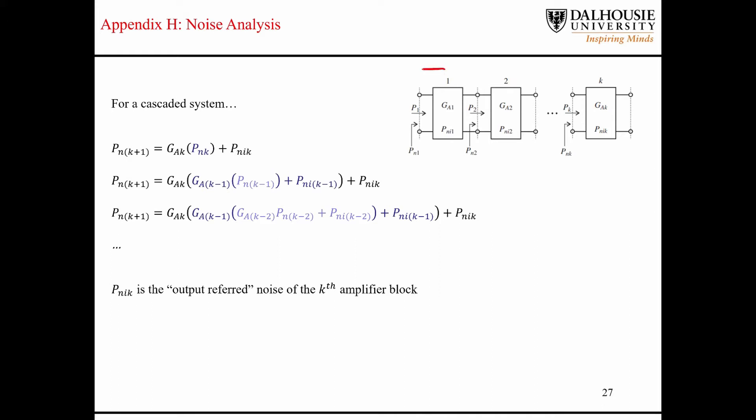Let's look at this first block here as an example. This is where we see the noise caused by the active component — the BJT, or potentially the combination of multiple BJTs or transistors — defined at the output side of the amplifier stage, or the output referred noise. Those are the numbers written inside each one of these blocks.